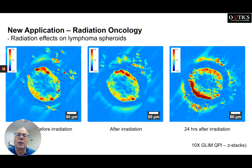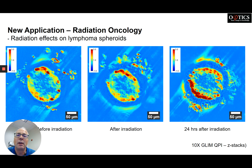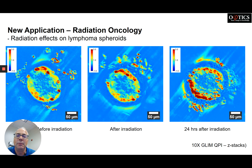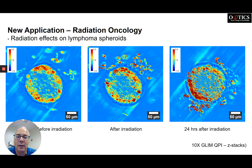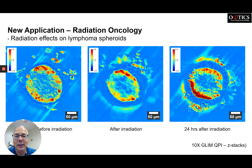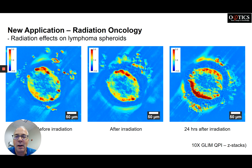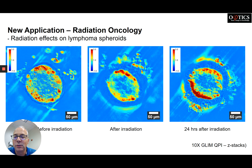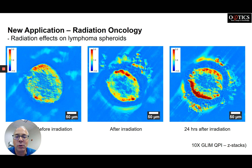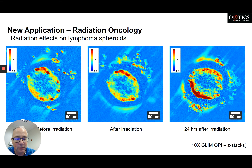What we want to talk about today is our new radiation oncology application. We're working to get more information and testing in the radiation oncology field. What you're looking at here is a spheroid before radiation on the left, after in the center, and then 24 hours after on the right. It's kind of like a heat map — the red is more thick and optically dense than the yellow or green surrounding areas — so you can see in real time what's going on with your specimen.